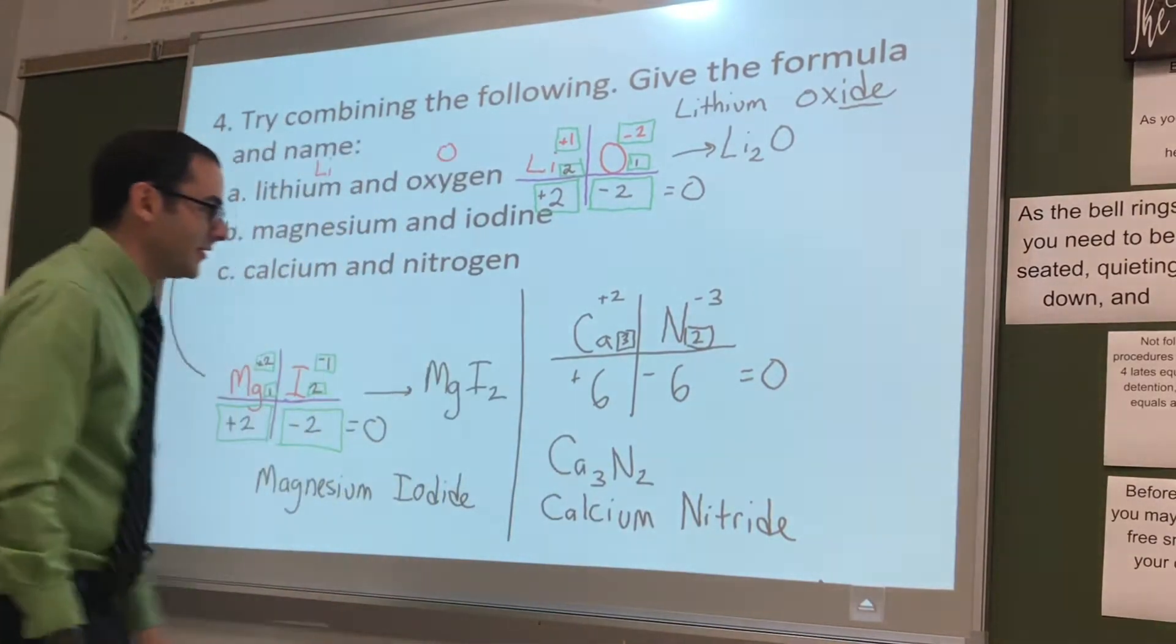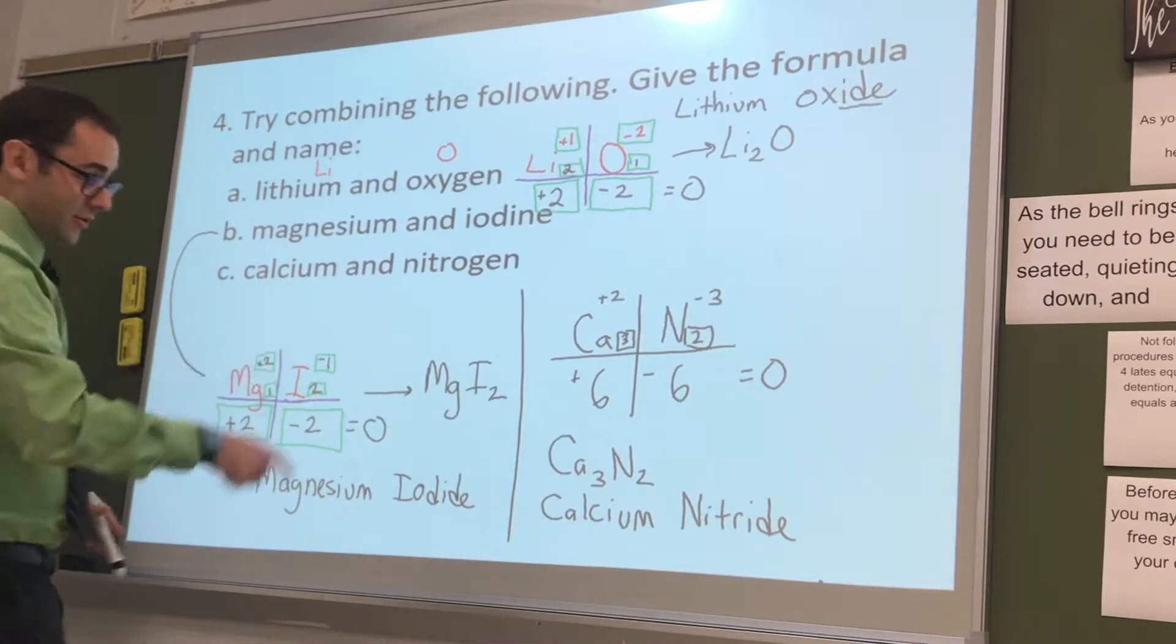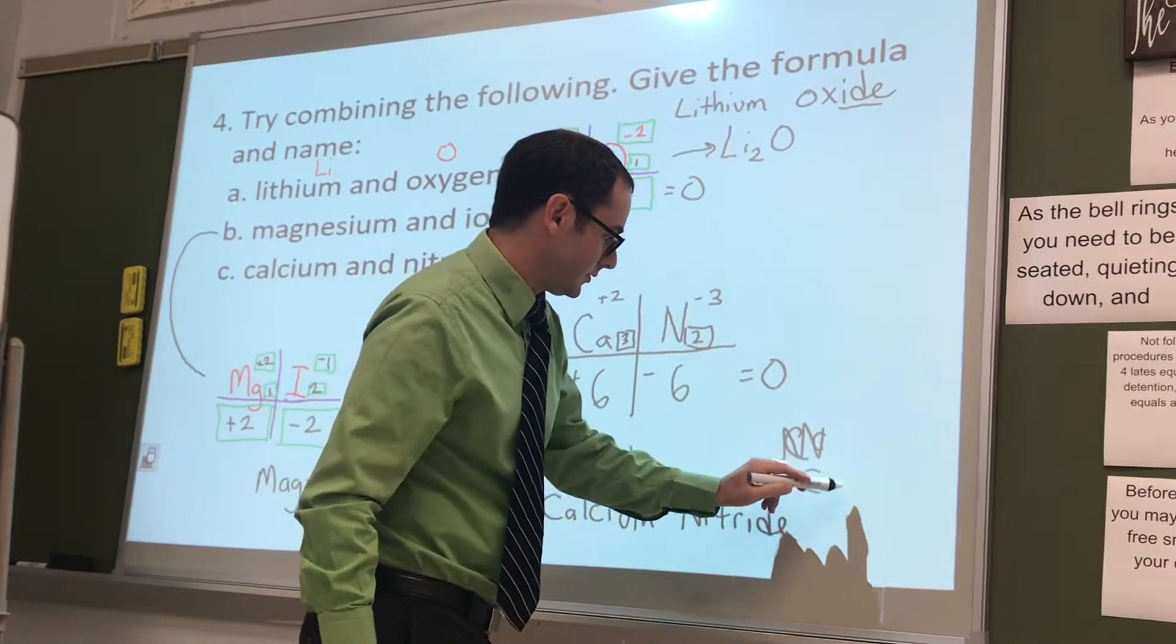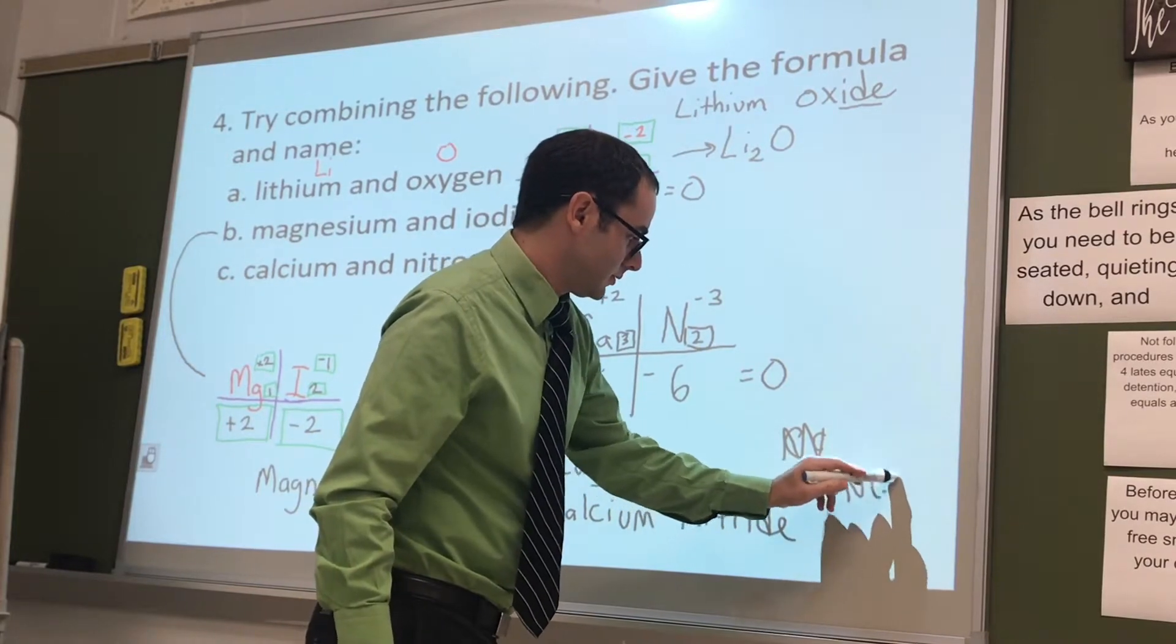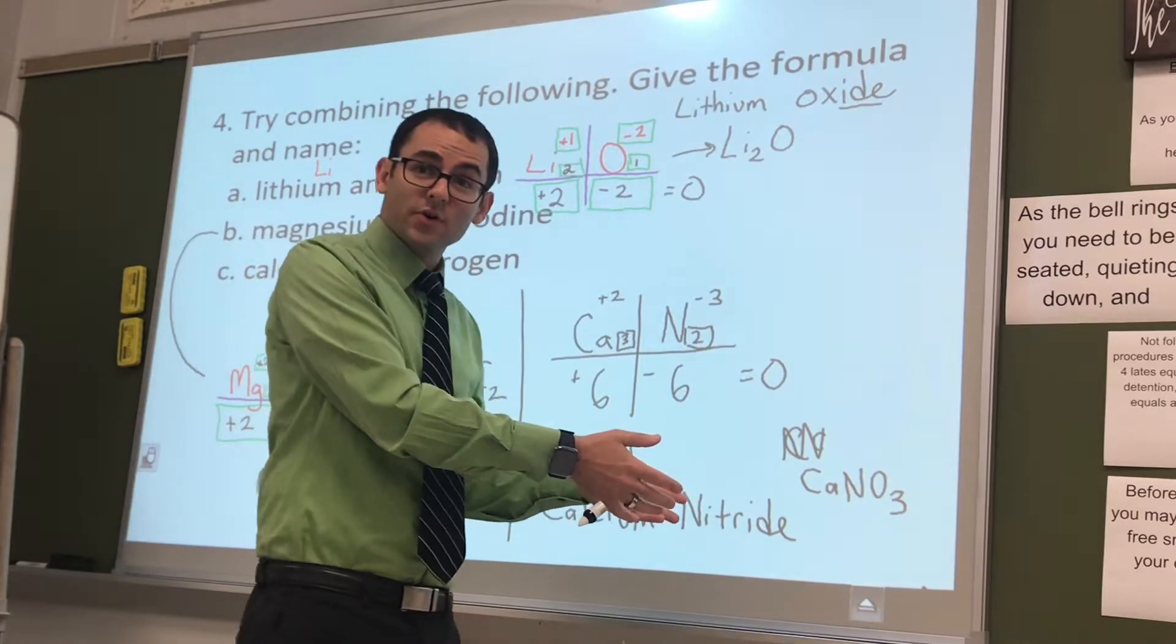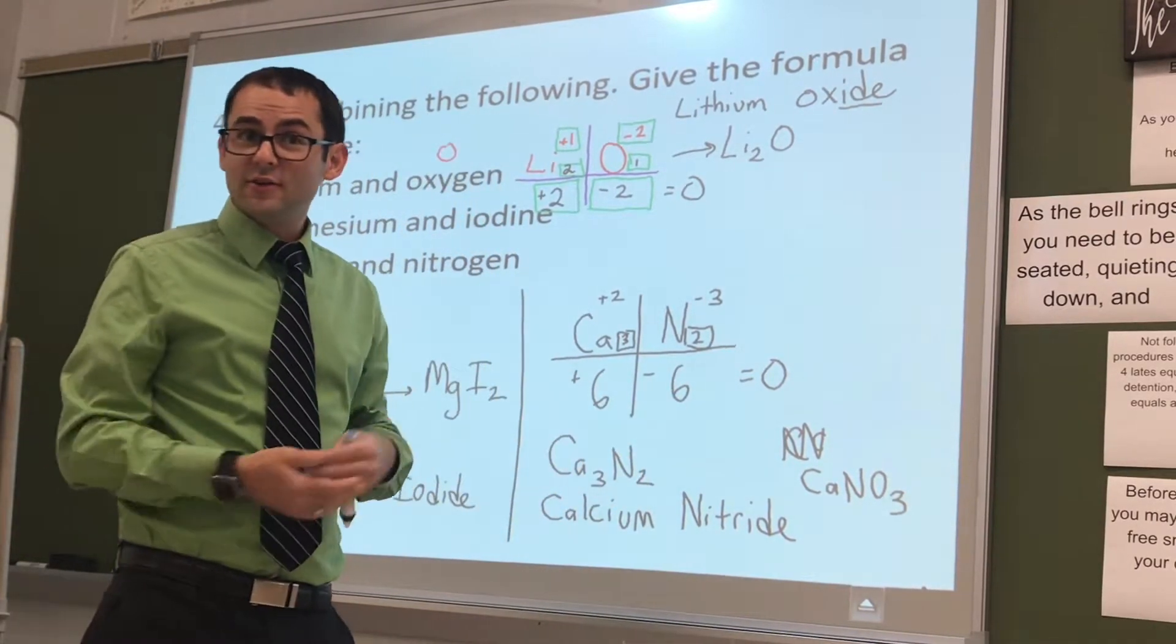Calcium nitride. Alright. Ca3N2. Because now, check this out. This is very different. This is actually wrong. Let's do this one real quick. Calcium and this NO3 thing. What's NO3? Nitrate.